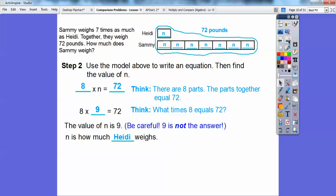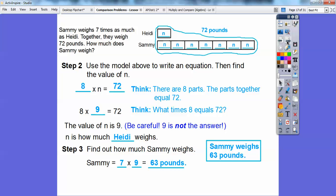Remember, the question says how much does Sammy weigh? Well, we're going to have to multiply that by seven because n is how much Heidi weighs, and since Sammy weighs seven times as much as that, then Sammy is going to be seven times nine, which is 63 pounds. So that's how much Sammy weighs. Sammy must weigh 63 pounds.